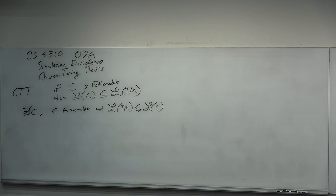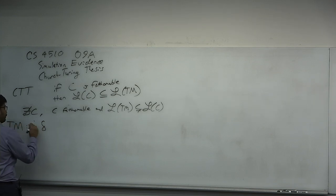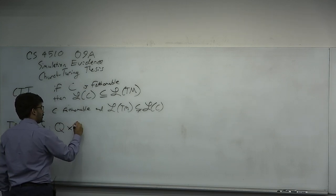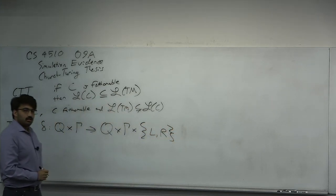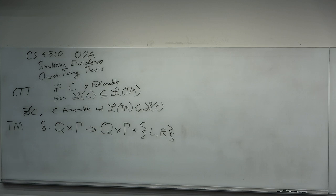We're going to create several generalizations of the Turing machine today — give it a bunch of features — and then we'll fail to literally generalize the Turing machine, leaving us to conclude evidence in favor of the Church-Turing thesis. The first generalization is more of a warm-up. Recall the transition function of a Turing machine: it takes a state, reads a symbol off the tape, transitions to a new state, writes a symbol, and then chooses to move left or right. We use this definition because it makes all the proofs simpler.